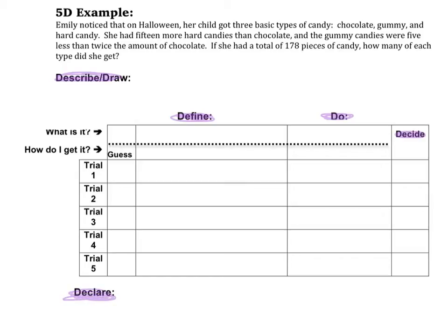Let's use this example to go through and teach you how to set up a 5D process. Emily noticed that on Halloween, her child got three basic types of candy: chocolate, gummy, and hard candy. She had 15 more hard candies than chocolate, and the gummy candies were five less than twice the amount of chocolate. If she had a total of 178 pieces of candy, how many of each type did she get?